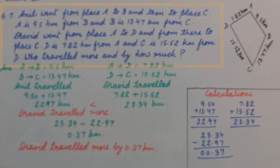Let's continue. Exercise 3A, question number 7. Anil went from place A to B and then to place C. A is 9.5 km from B and B is 13.47 km from C.